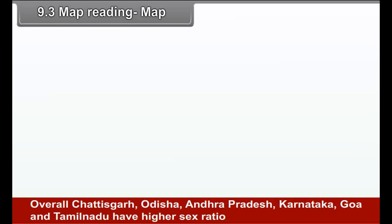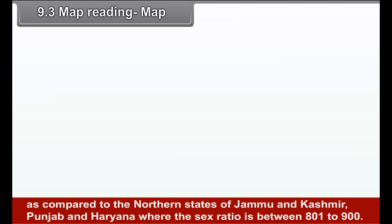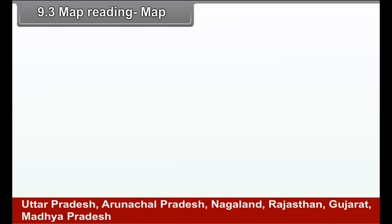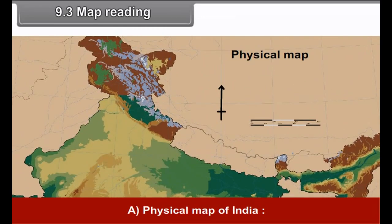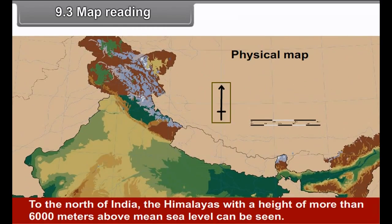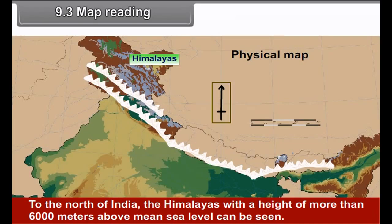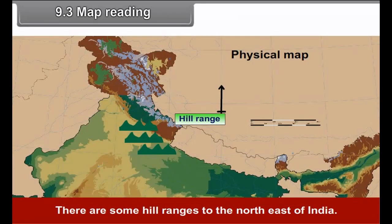Union territories like Chandigarh, Delhi, Dadra, Nagar Haveli, Daman and Diu, etc. have a very low sex ratio except Puducherry which has 1038 sex ratio. Overall, Chhattisgarh, Odisha, Andhra Pradesh, Karnataka, Goa and Tamil Nadu have higher sex ratios as compared to the northern states of Jammu and Kashmir, Punjab and Haryana whereas the sex ratio is between 801 to 900. Uttar Pradesh, Arunachal Pradesh, Nagaland, Rajasthan, Gujarat, Madhya Pradesh and Maharashtra have a sex ratio ranging from 901 to 950.